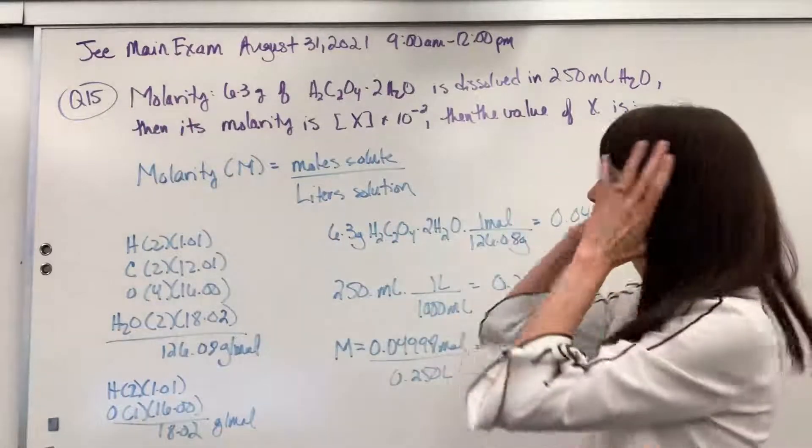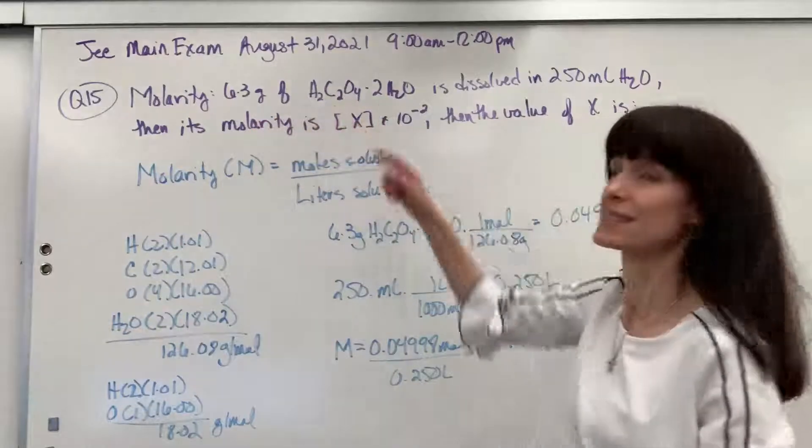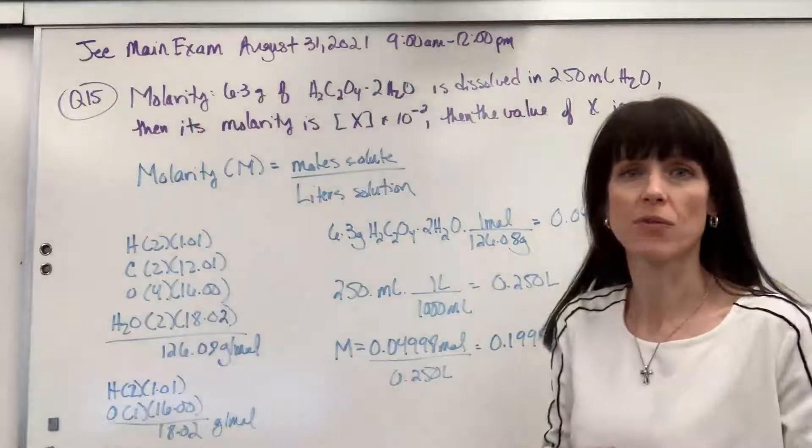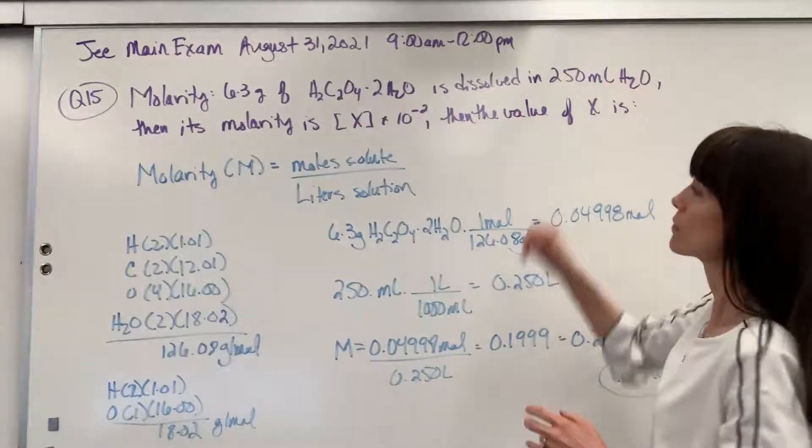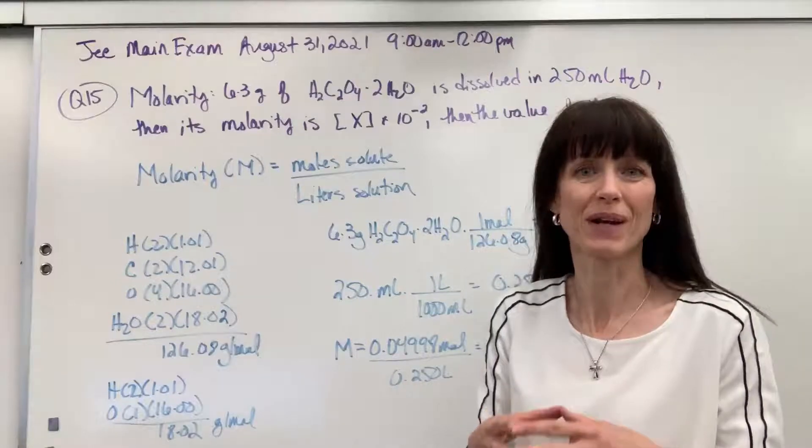They're talking about molarity. And here's what they give us. 6.3 grams of an oxalic acid dihydrate is dissolved in 250 mL of water. Now they write water. We are going to assume that that is a water solution. That's going to be our solution.